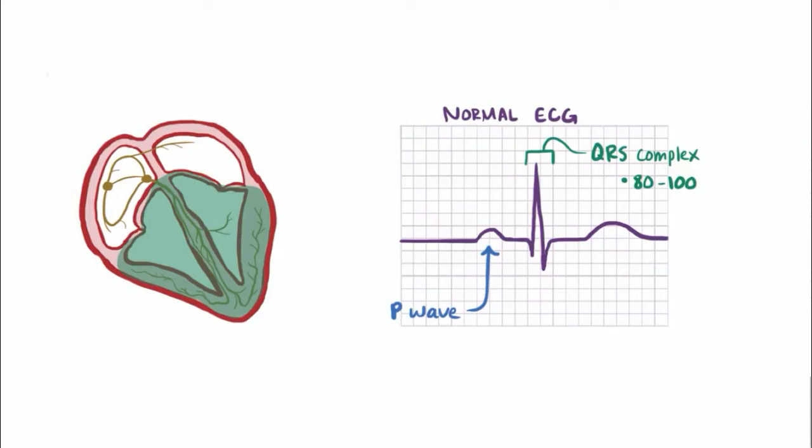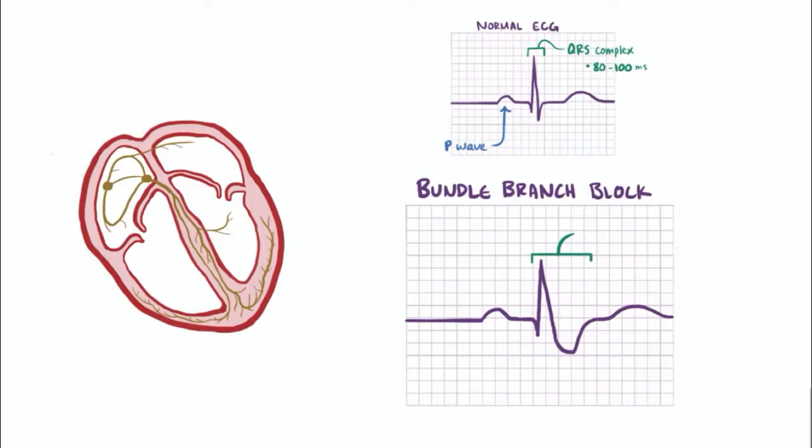If there's a delay in depolarization of one of the ventricles, the QRS complex gets wider because depolarization starts on time but ends later than usual. Since now one of the ventricles is contracting late, a QRS complex longer than 120 ms is common to see in a bundle branch block.